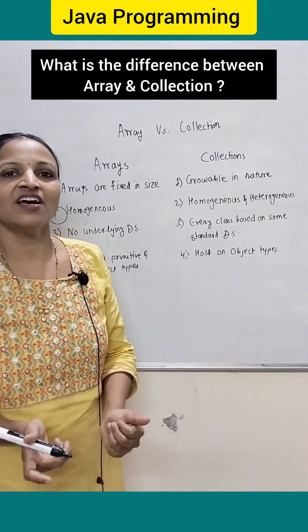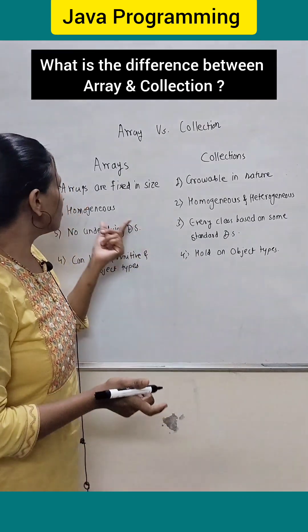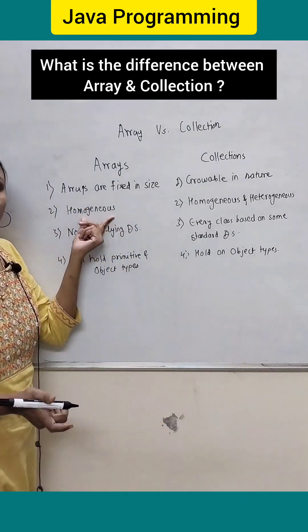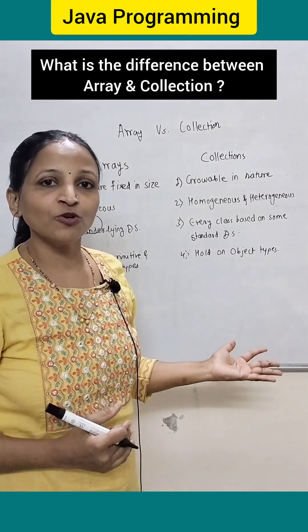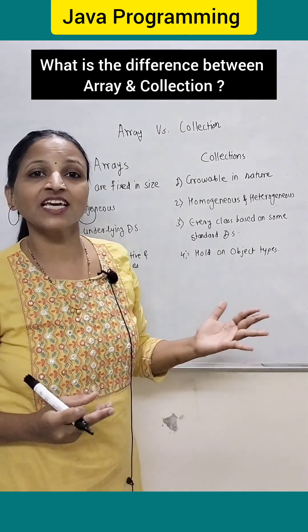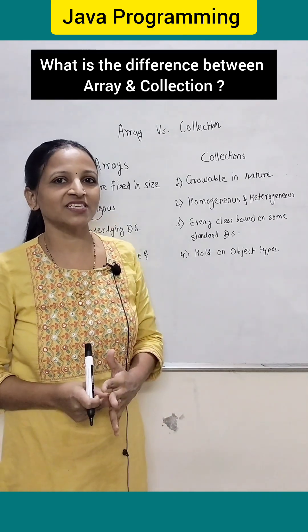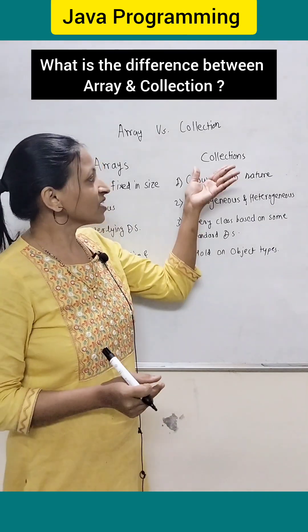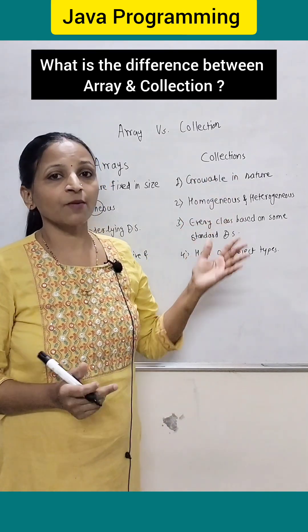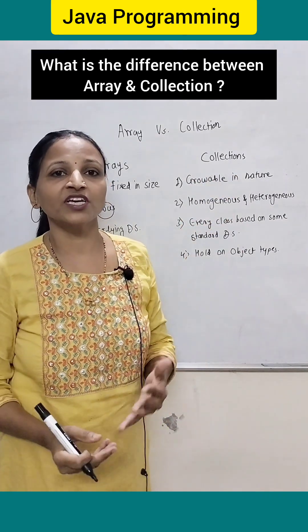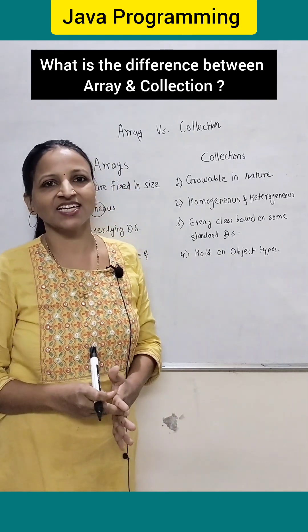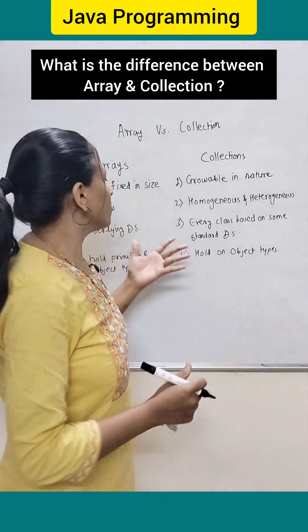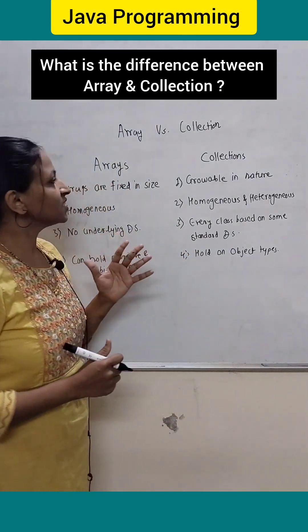Arrays can hold only homogeneous elements — meaning elements of the same data type. But collections are capable of storing both homogeneous as well as heterogeneous data.